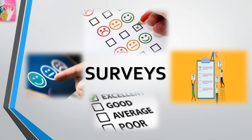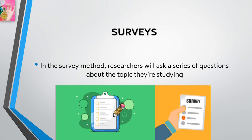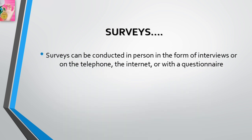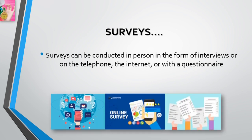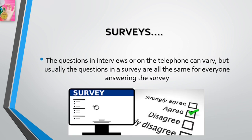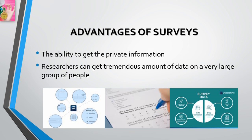Sometimes what psychologists want to know about is pretty personal, and the only way to find out about a very private behavior is to ask questions. In survey methods, researchers ask a series of questions about the topic they are studying. Surveys can be conducted in person in the form of interviews, on the telephone, the internet, or with a questionnaire. Usually the questions in a survey are all the same for everyone, and this way researchers can ask lots of questions and survey literally hundreds of people.